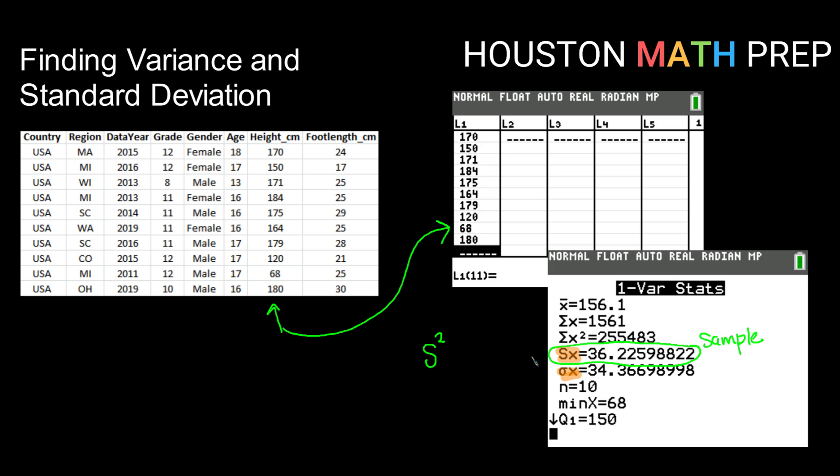If you want to know the variance, you need to go back to the home screen or use your calculator function and square this data value. So squaring 36.2259 and so on, and that would give you your variance.